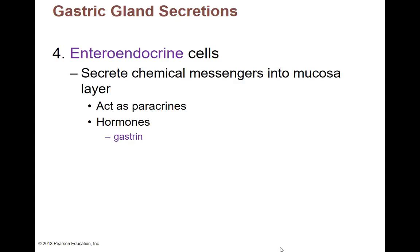The enteroendocrine cells act as paracrines — they're hormones that the intestinal cells make, not the endocrine system, but they work just like the endocrine system. The biggest hormone they make — the only one I care that you know — is a hormone called gastrin. Their big thing is making hormones; even though they're not technically part of the endocrine system, we are still making hormones. These hormones stay in the digestive system.